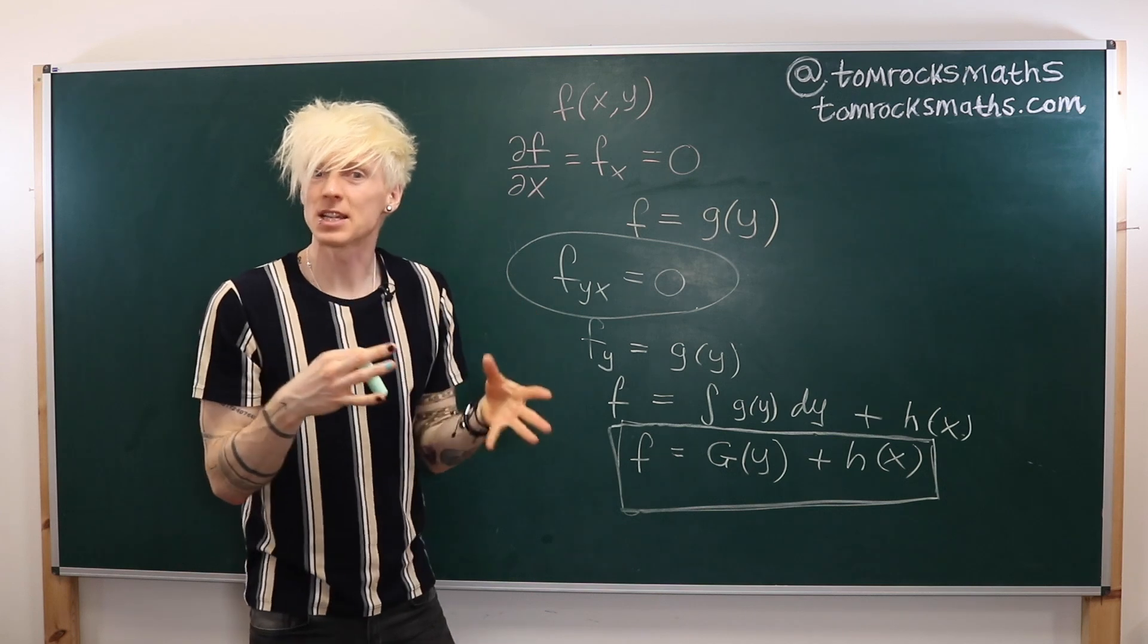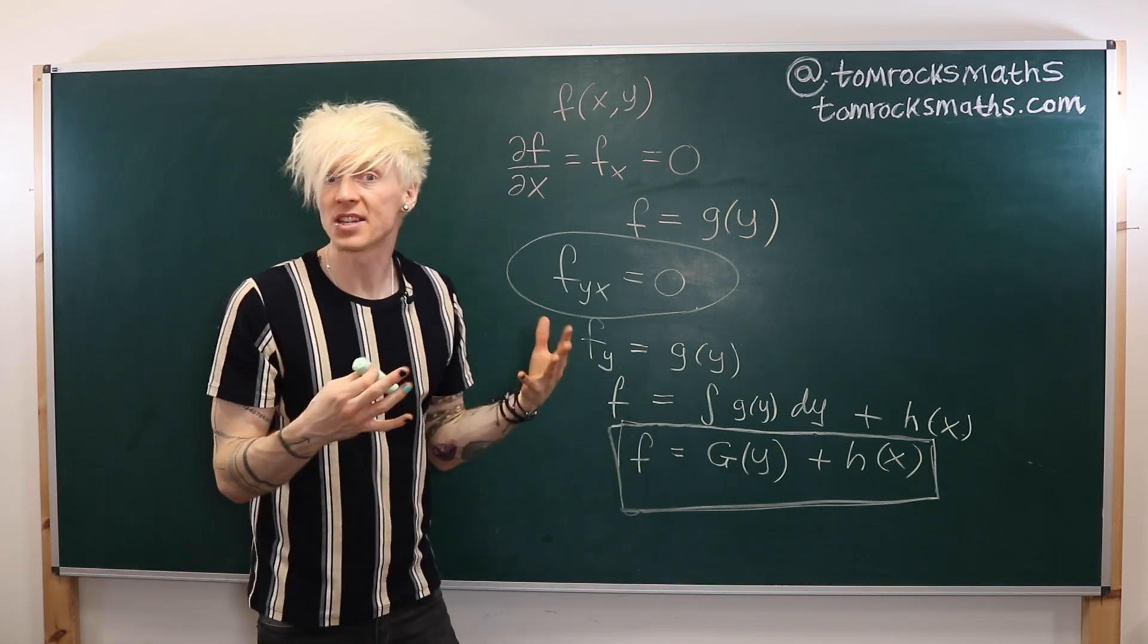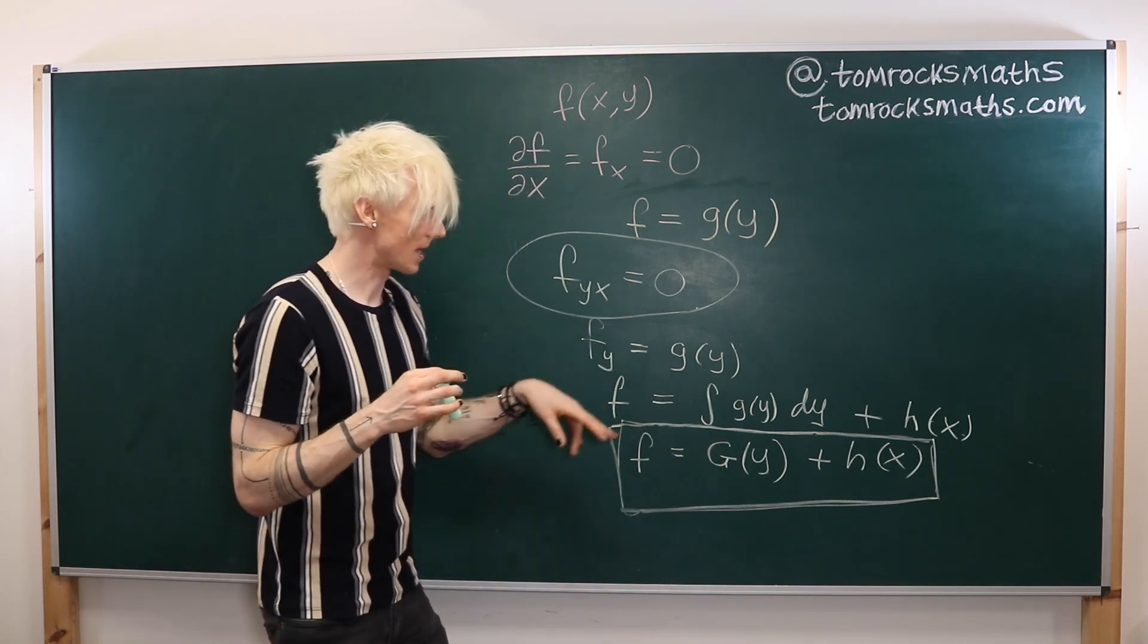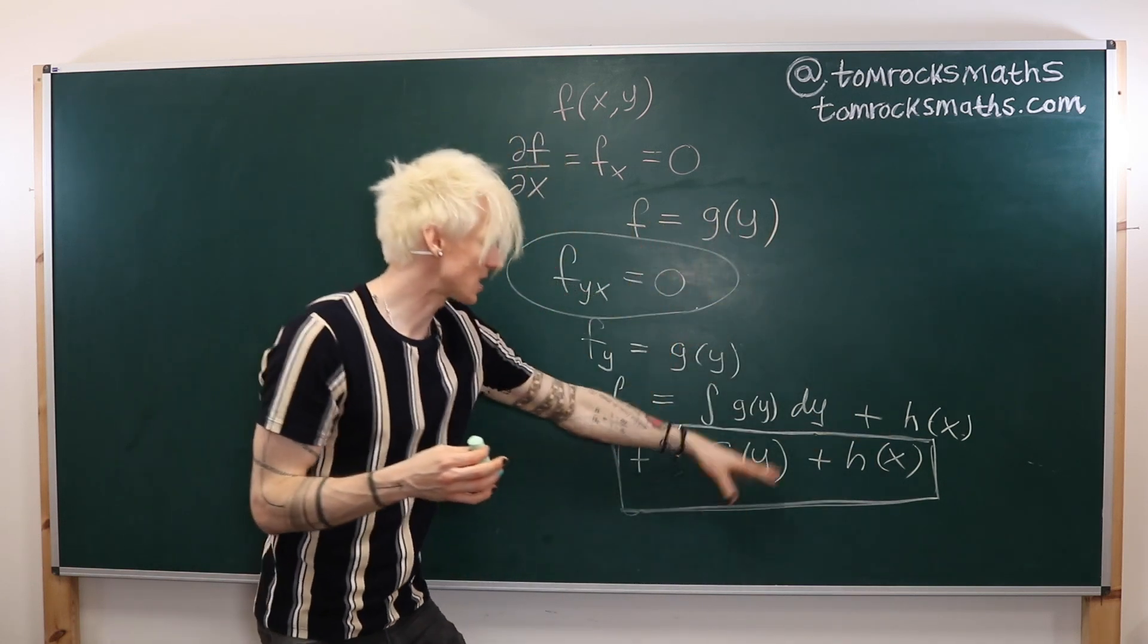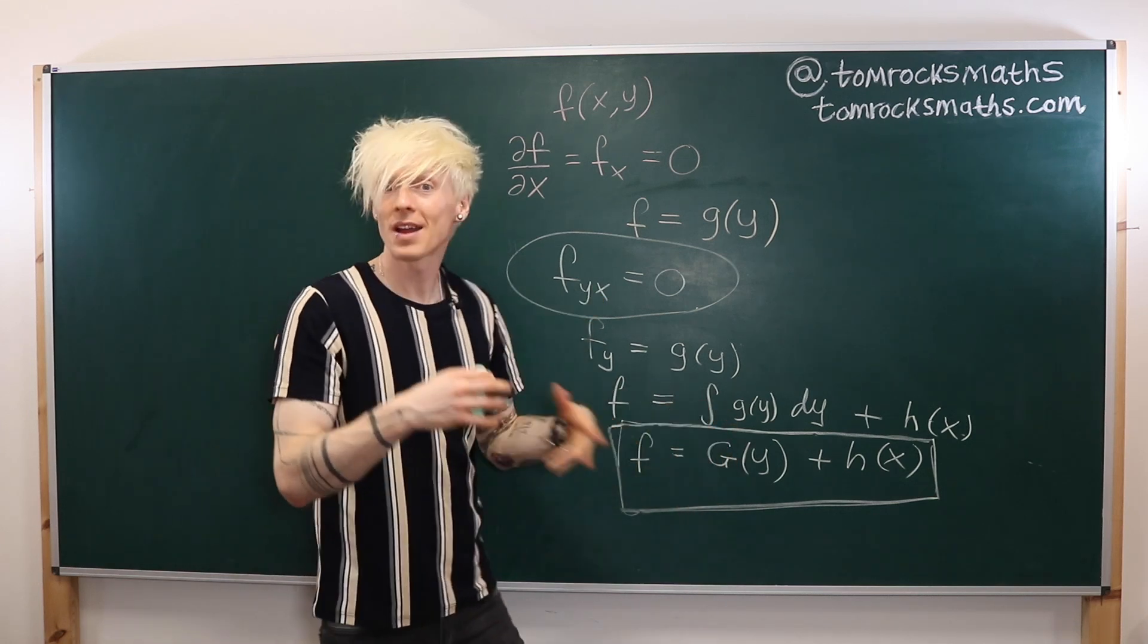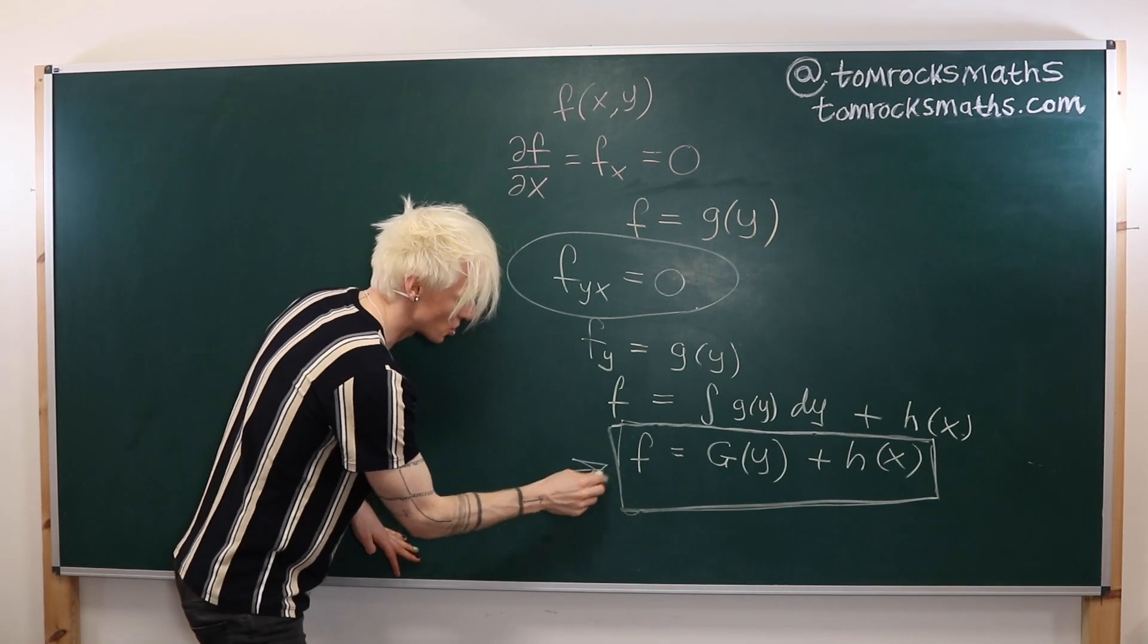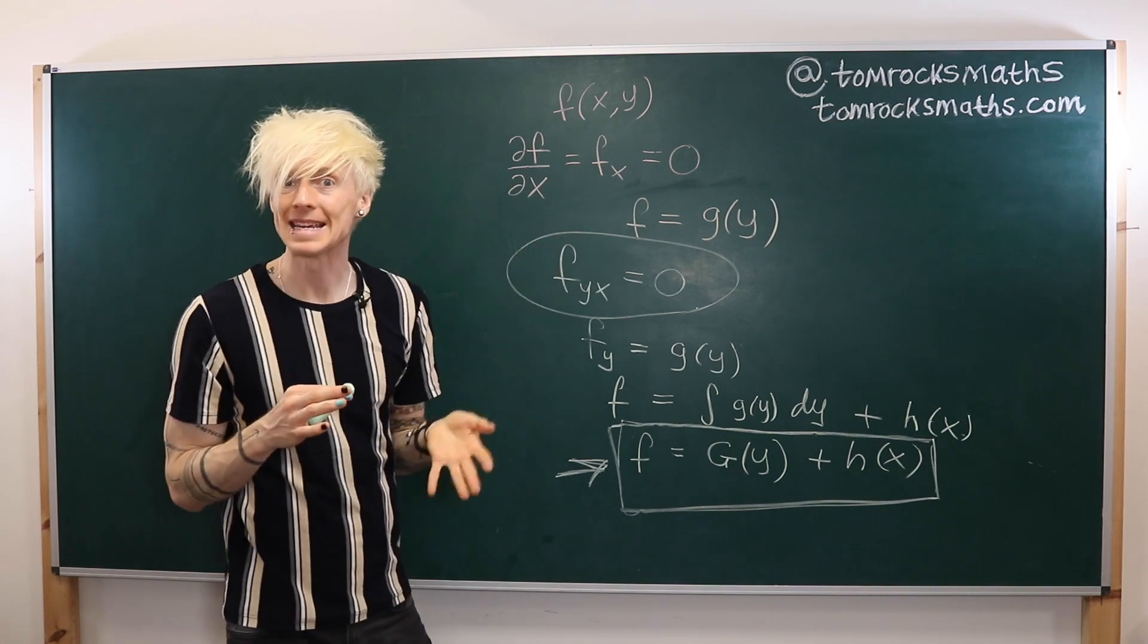And this makes sense. We can double check to see if this is indeed a solution to this PDE. So if this is my f, if I take my y derivative, the x function vanishes and I get something here involving y. And then when I take the x derivative, the y function vanishes. So I will get back to zero. So this is indeed the most general form of solution to this second order PDE.